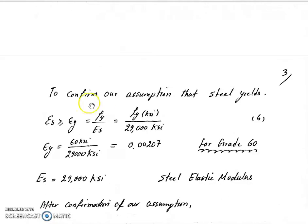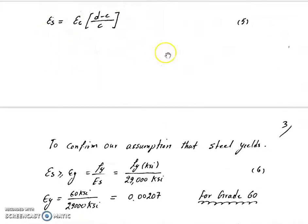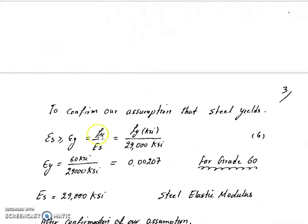We find epsilon s using this equation number 5. Epsilon y is fy over Es. fy is the yield strength of the steel rebar and Es is the steel elastic modulus, or modulus of elasticity of the steel rebar. It's 29,000 ksi.